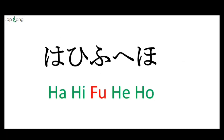Now we'll be learning another 5 new characters — that is the HA group: HA, HI, FU, HE, HO. You need to pay attention: it is not HA, HI, HU — it's FU. So: HA, HI, FU, HE, HO.